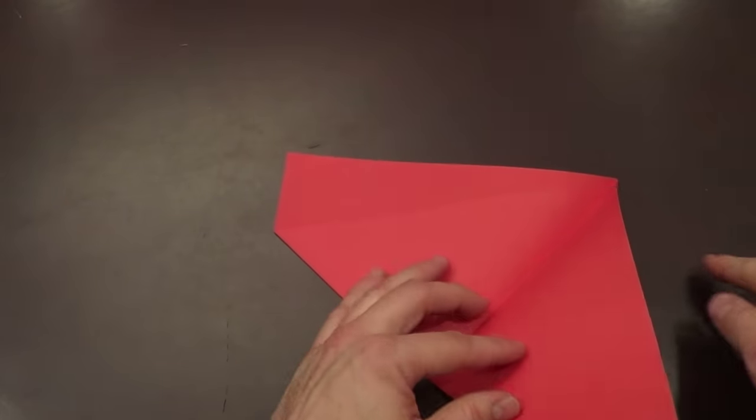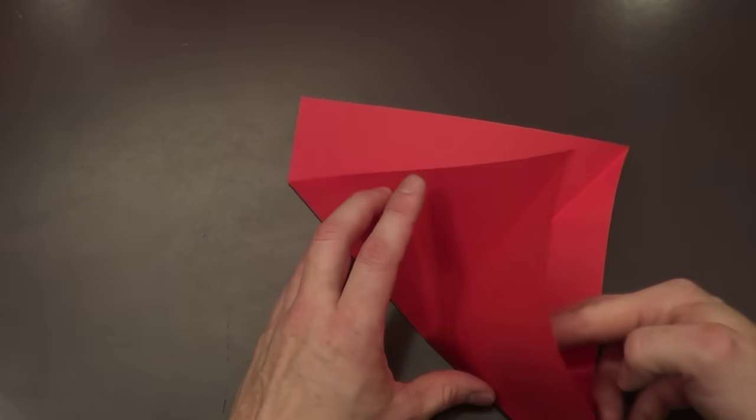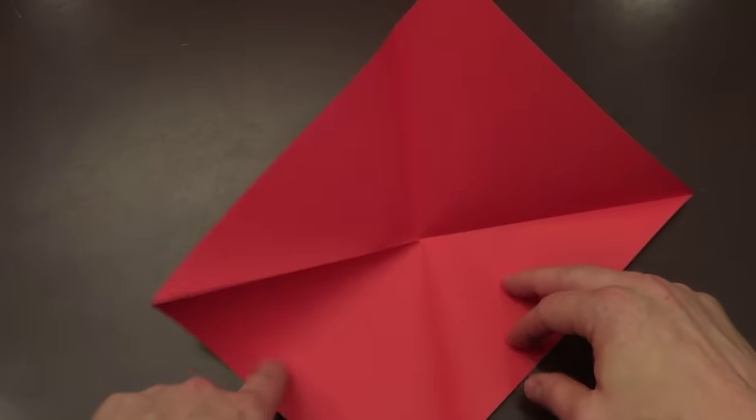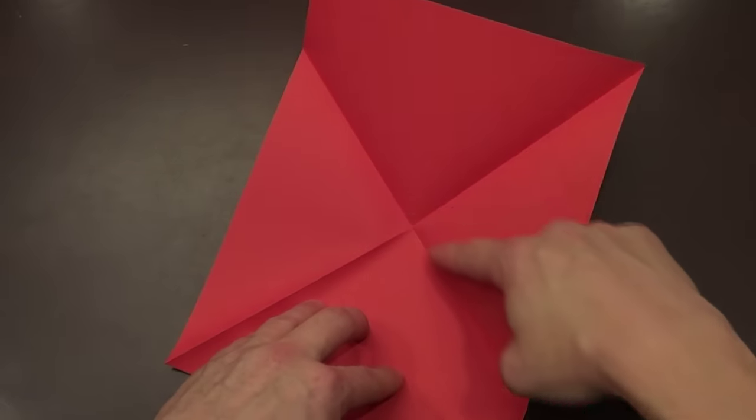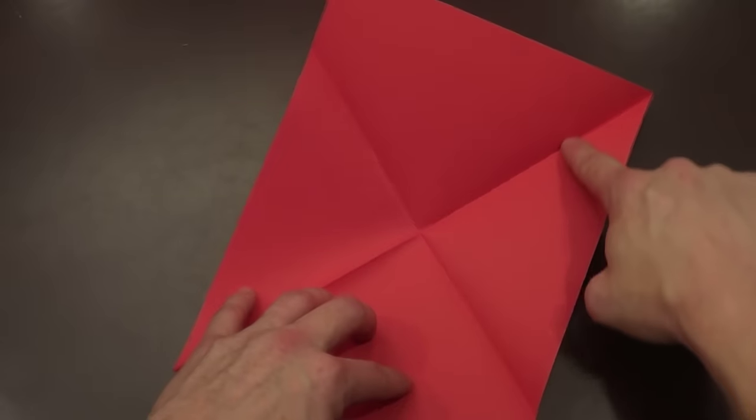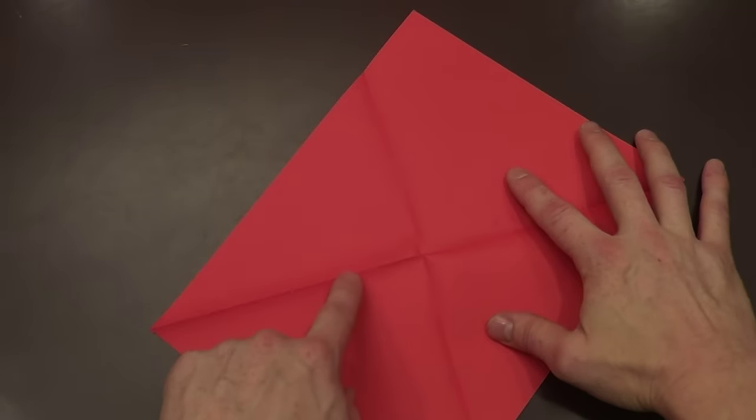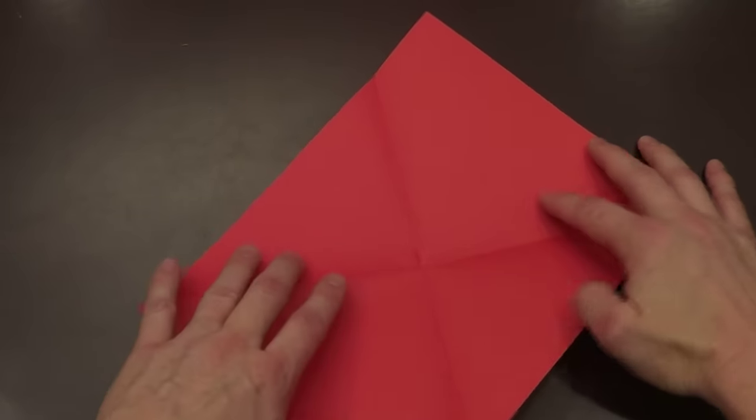Then I'm going to open this up all the way. Now, you're going to notice we have these valley folds. That's a valley fold, but we have one mountain fold, and what we need to do is we need to reverse that.